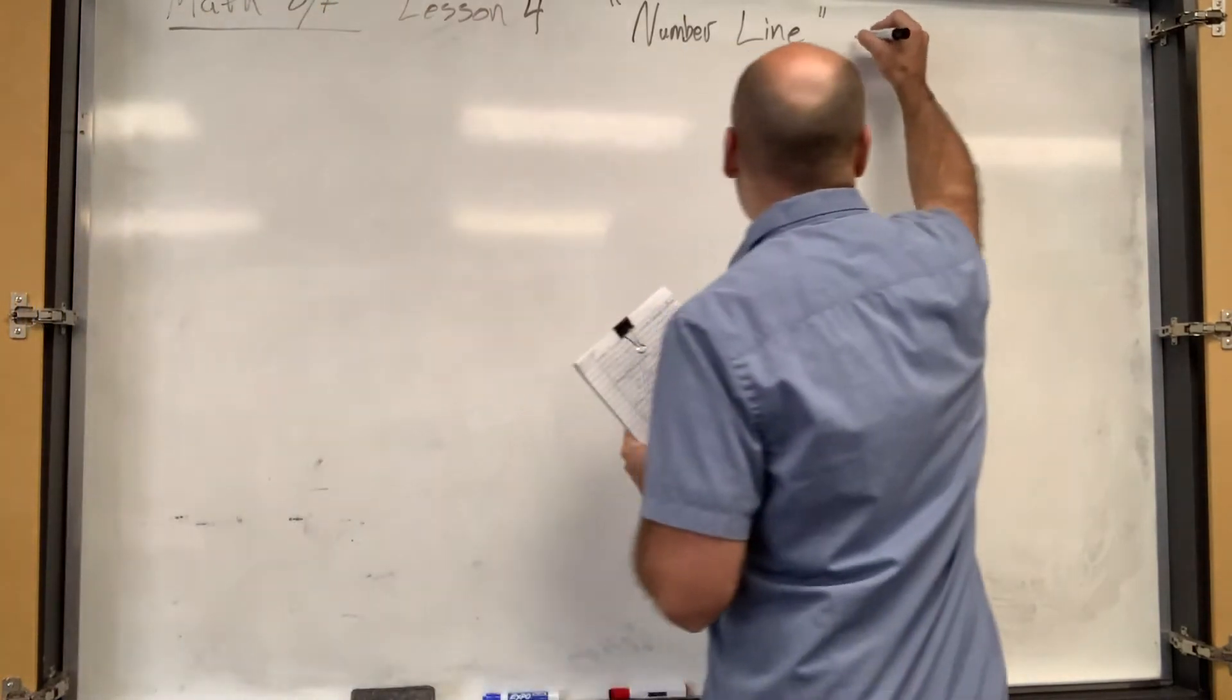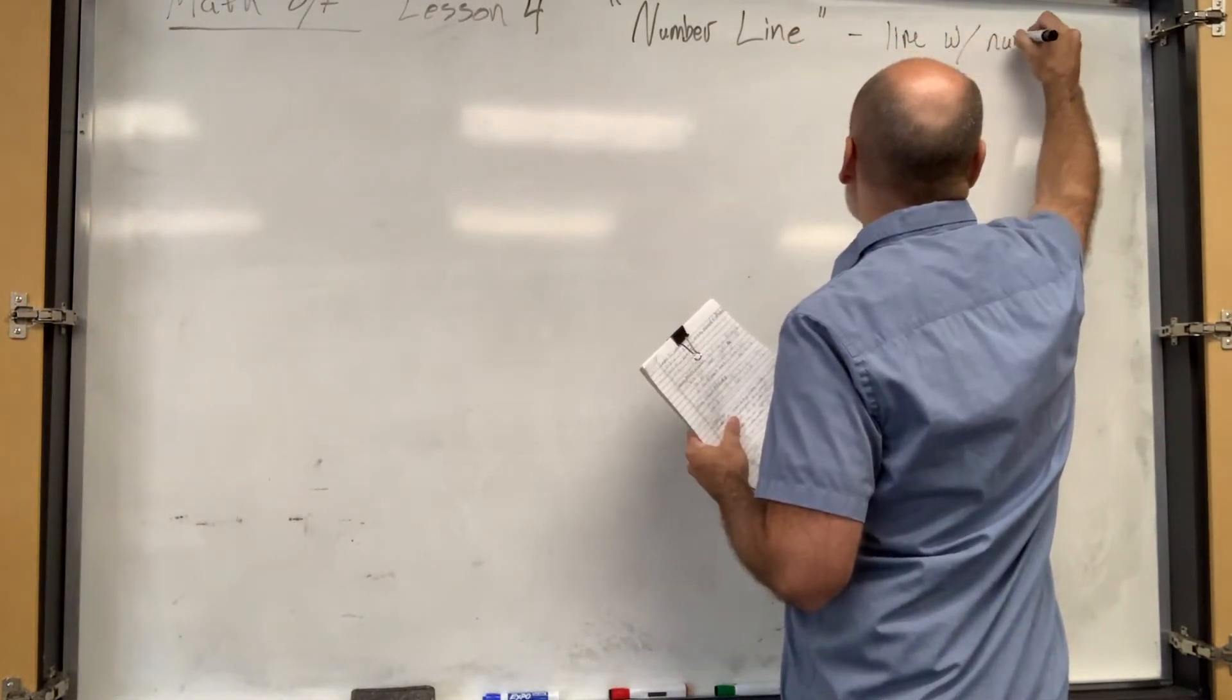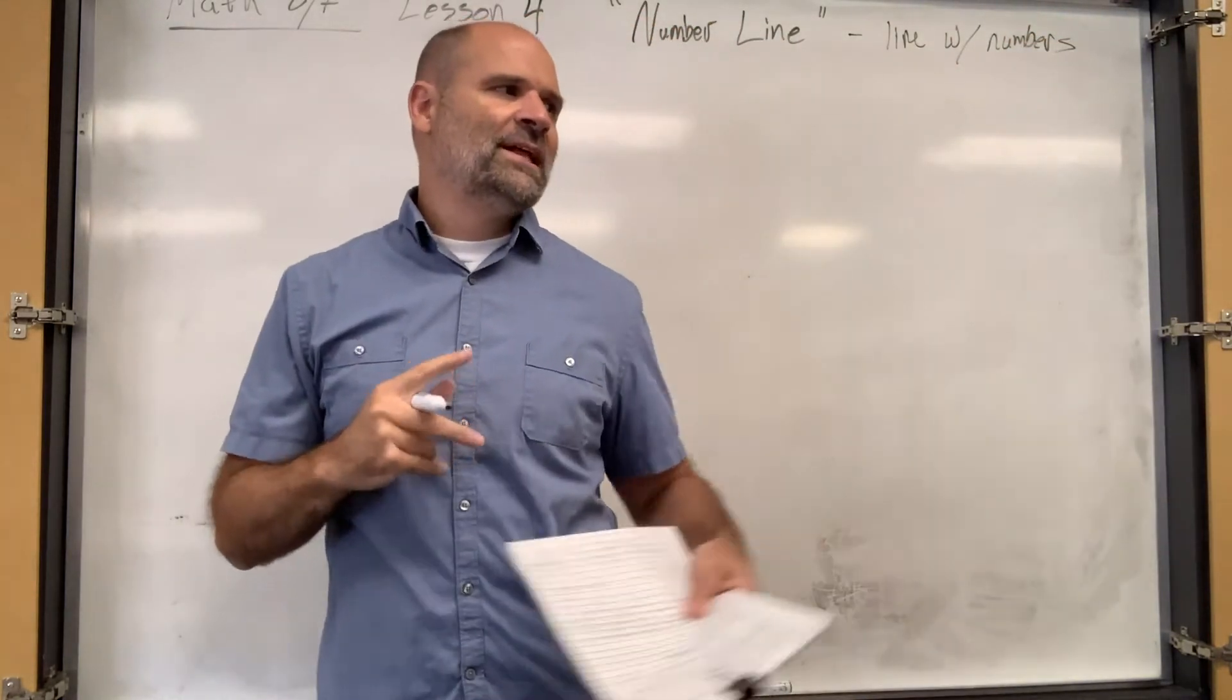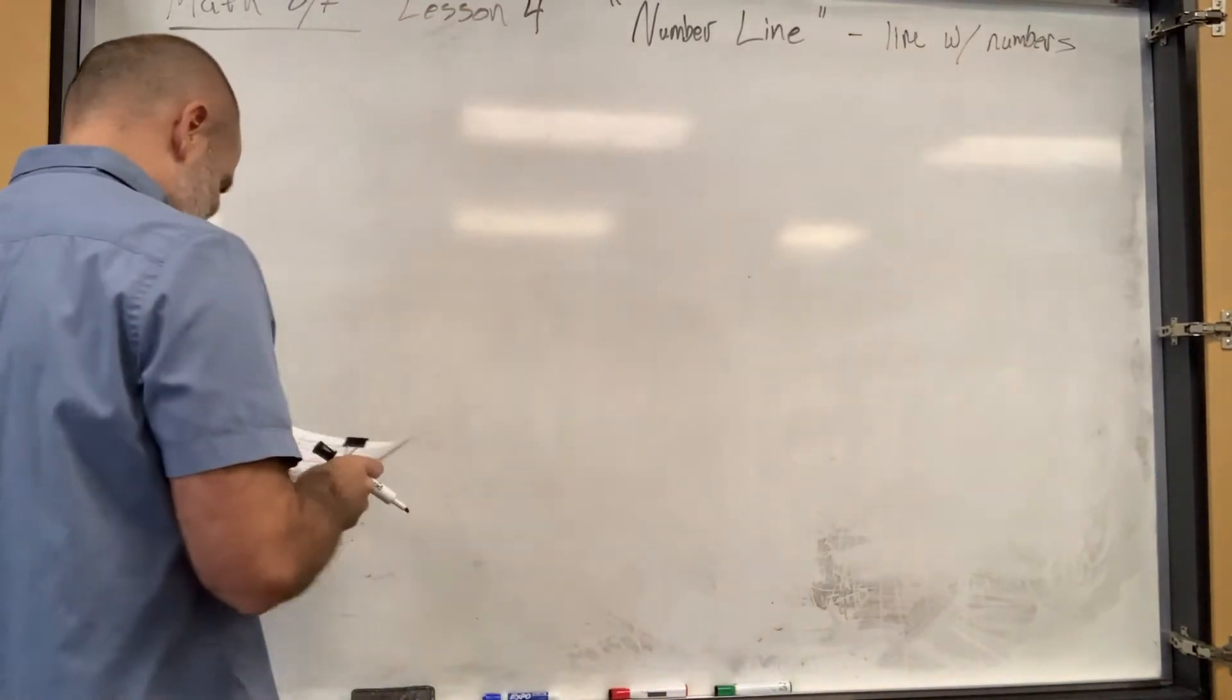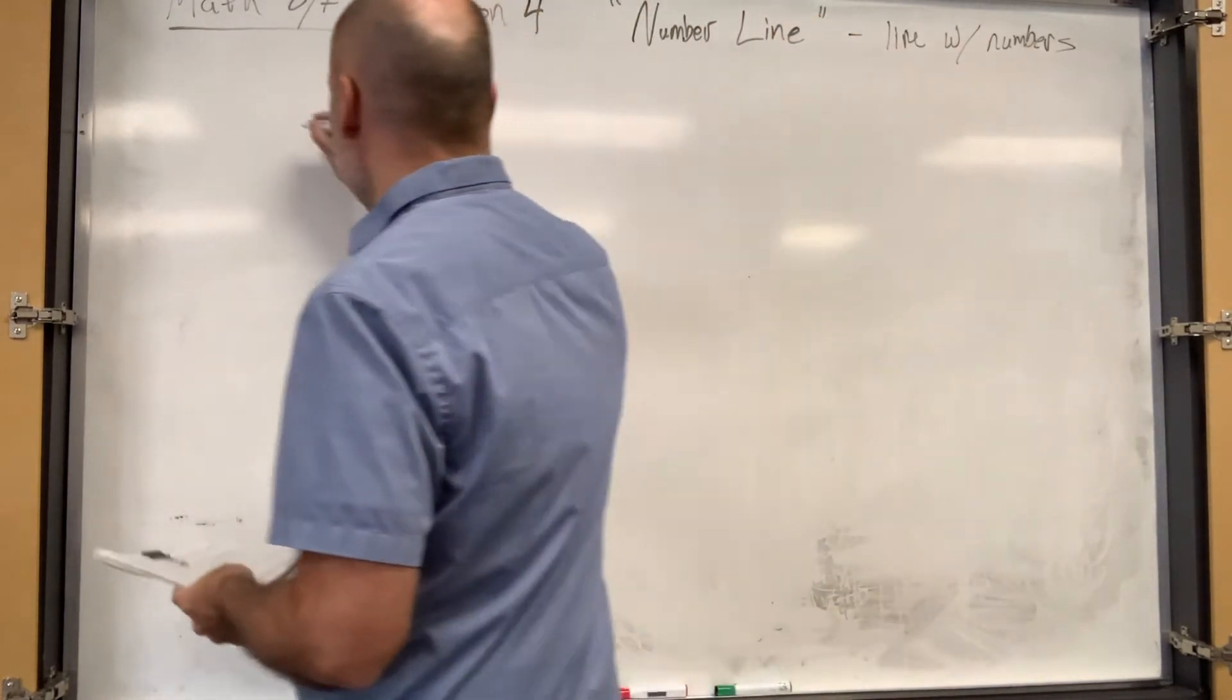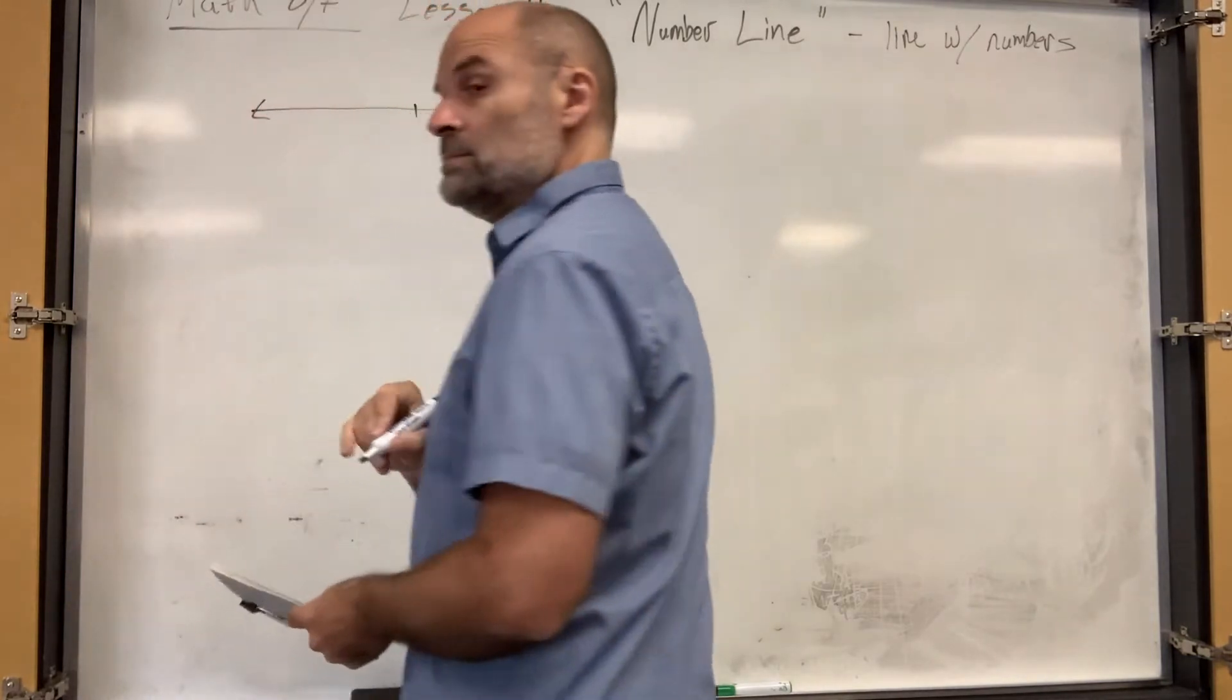So a number line is a line with numbers. I could tell he was going to say that just by that smirk on his face. All right, so the number line is just a graphical representation of our number system. What's right in the middle? Zero.